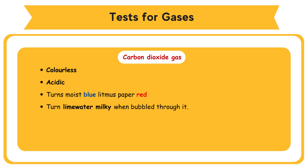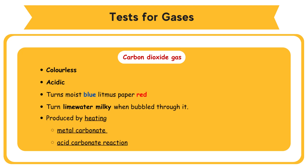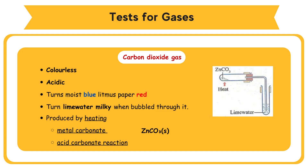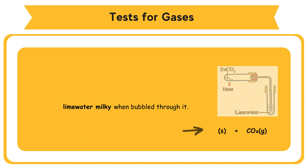Carbon dioxide is a colorless, acidic gas. It turns moist blue litmus paper red and turns lime water milky when bubbled through it. It is produced by heating a metal carbonate or acid carbonate. ZnCO3 (solid) → ZnO (solid) + CO2 (gas).